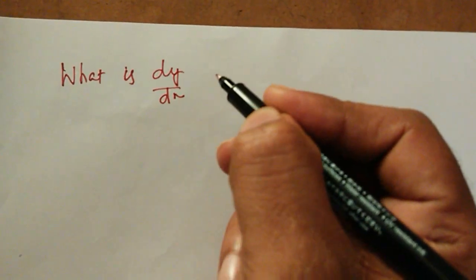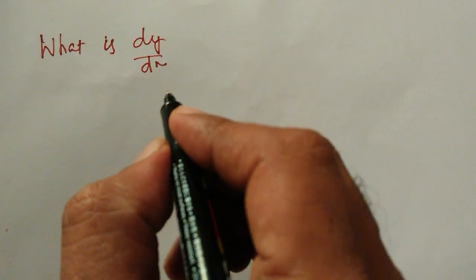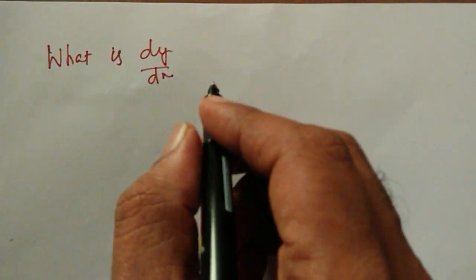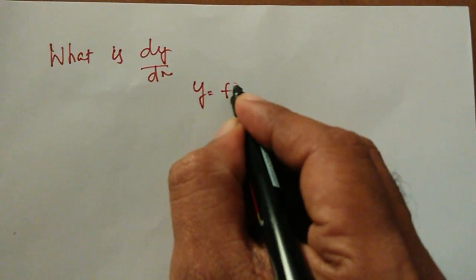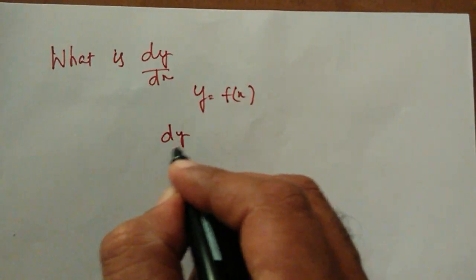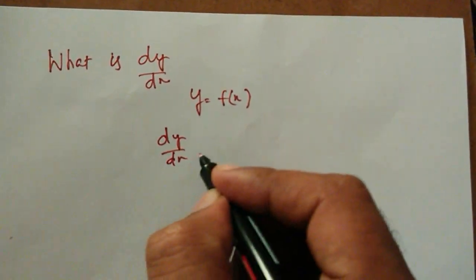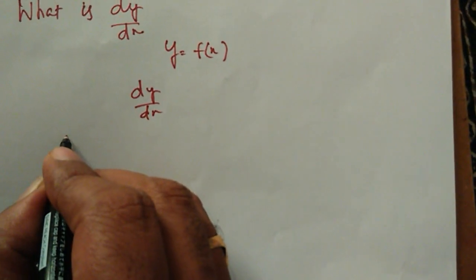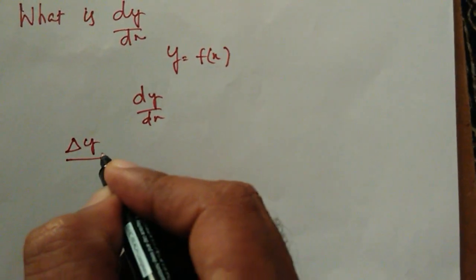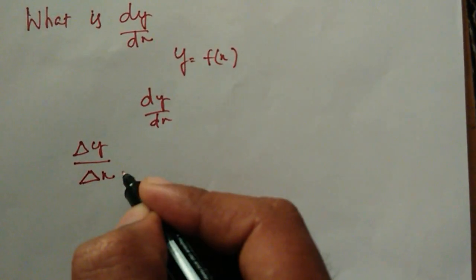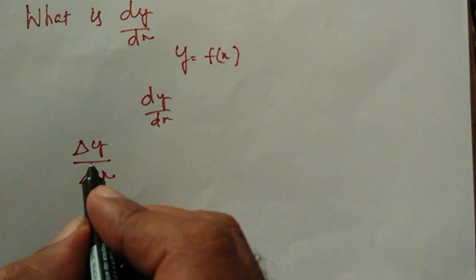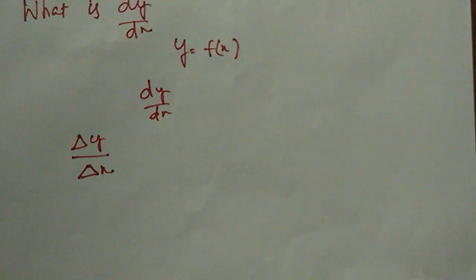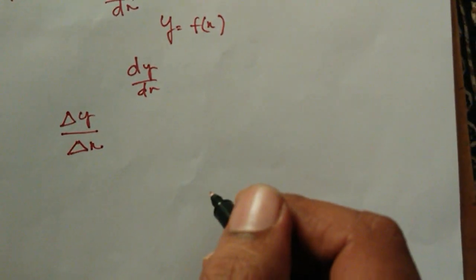What is dy by dx? When y is a function of x, dy by dx is the derivative of x. What this exactly means is change in y — that is delta y — with respect to change in x. Let us discuss what dy by dx is with the help of an example.